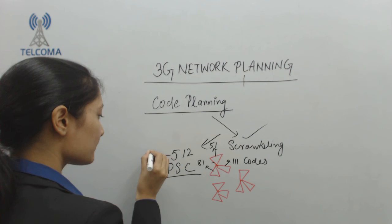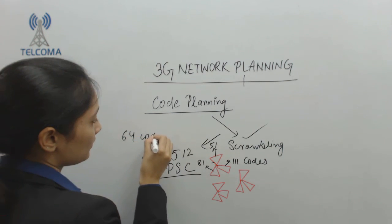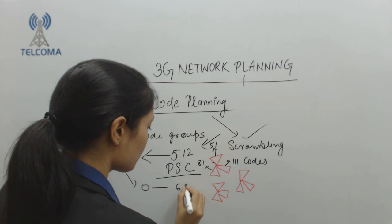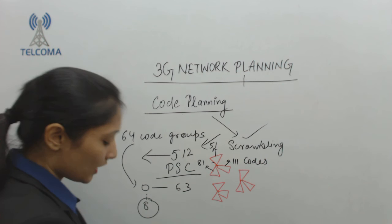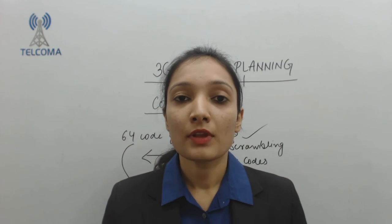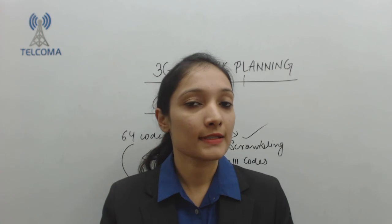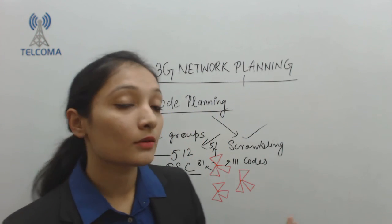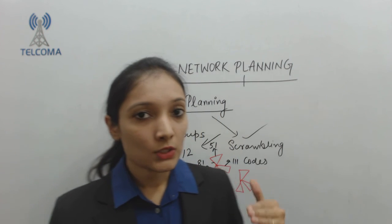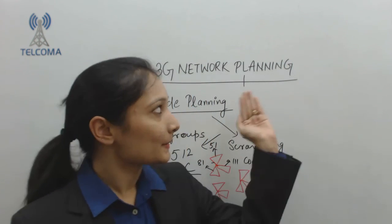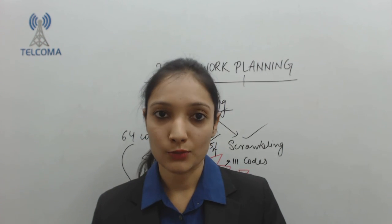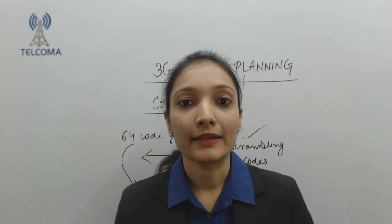As per 3GPP specifications, there are 512 scrambling codes divided into 64 groups of 8, numbered 0 to 63. Code planning is carried out so that different transmitters are distinguishable, with each cell allocated a different code. This is a fundamental issue in 3G network planning since the system is entirely code-based. If the network is planned phase by phase, step by step, it leads to the deployment of an efficient network. This concludes the overview of 3G network planning.